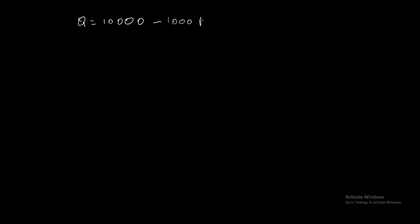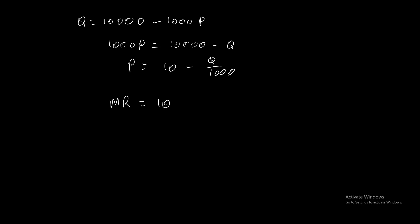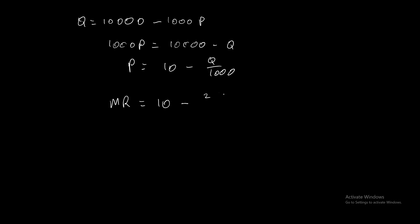You have a demand function of Q equal to 10,000 minus 1,000 P. Therefore, solving for P: 1,000 P equals 10,000 minus Q, so P equals 10 minus Q over 1,000. Now, your marginal revenue will always have the same intercept as the demand function and twice the gradient — so 2Q over 1,000 — which equals 10 minus Q over 500.